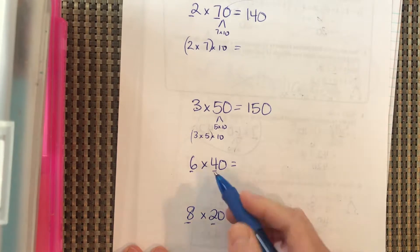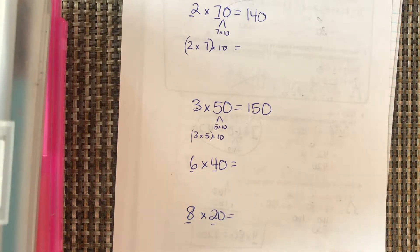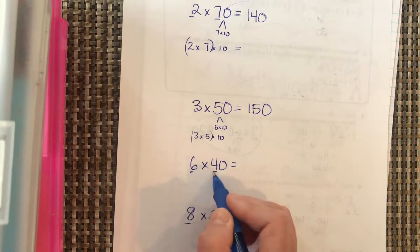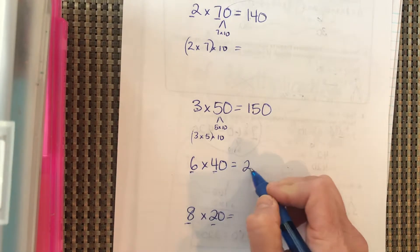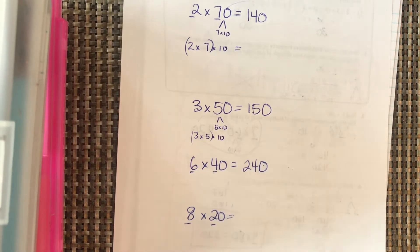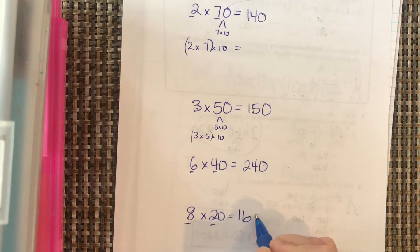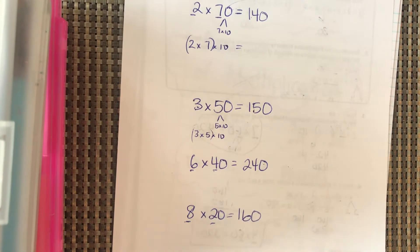Pause it and do both 6 times 40 and 8 times 20, then come back. For 6 times 40: 6 times 4 is 24, bring the zero over, so 6 times 40 is 240. For 8 times 20: 8 times 2 is 16, bring the zero over, so 8 times 20 is 160. Good job!